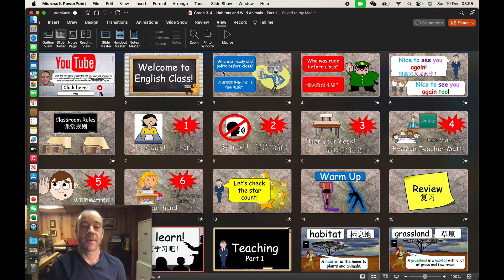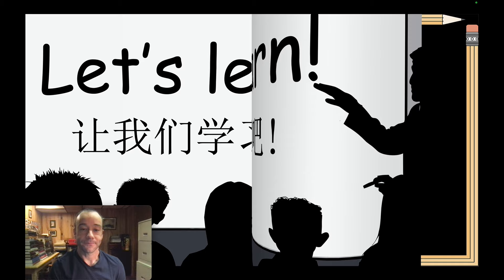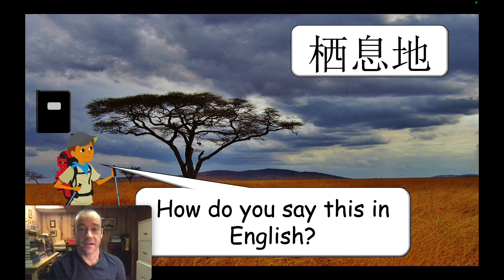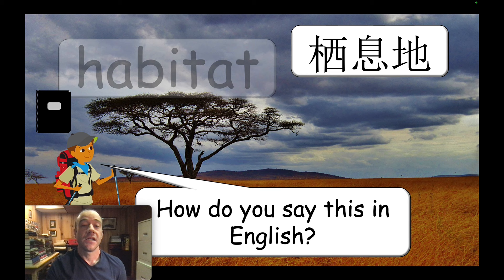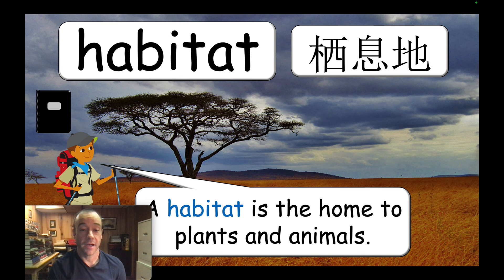Let's get right into this lesson. Let's have a look at this PowerPoint. After all of my normal classroom management stuff — which comes with all of my PowerPoints — we go into the lesson. So, teaching part one: this lesson is about habitats. The first word I'm going to present is the word 'habitat.' I'll ask how do you say this in English, see if any of them know, then teach them the word, the pronunciation, and have them write it down in their notebook. Here's the definition: a habitat is the home to plants and animals.